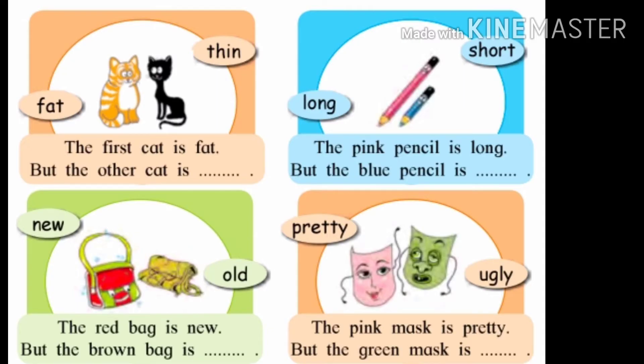Now come to the next picture. Two cats are given and two words are given: fat and thin. Fat manje zaad, thin manje barik. Now complete the sentence: The first cat is fat but the other cat is thin. Pahli manzar zaad ahe, tar dusri manzar hi barik ahe. Fat and thin, both words are opposite to each other.